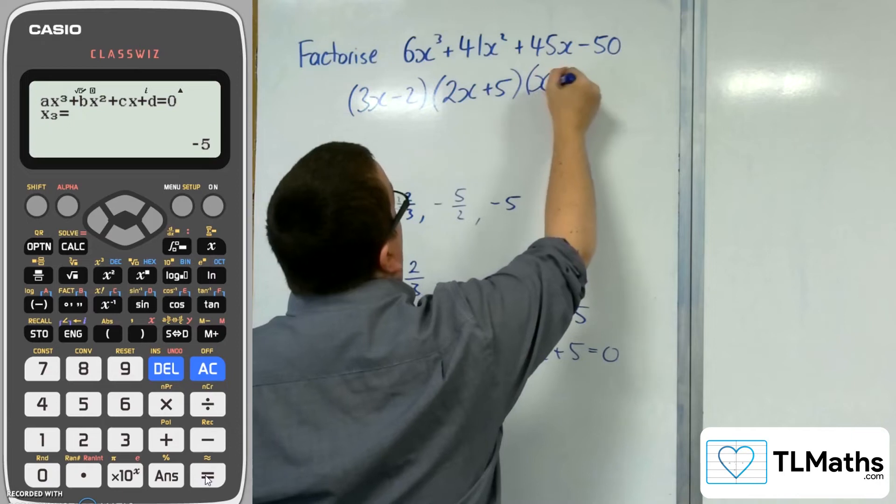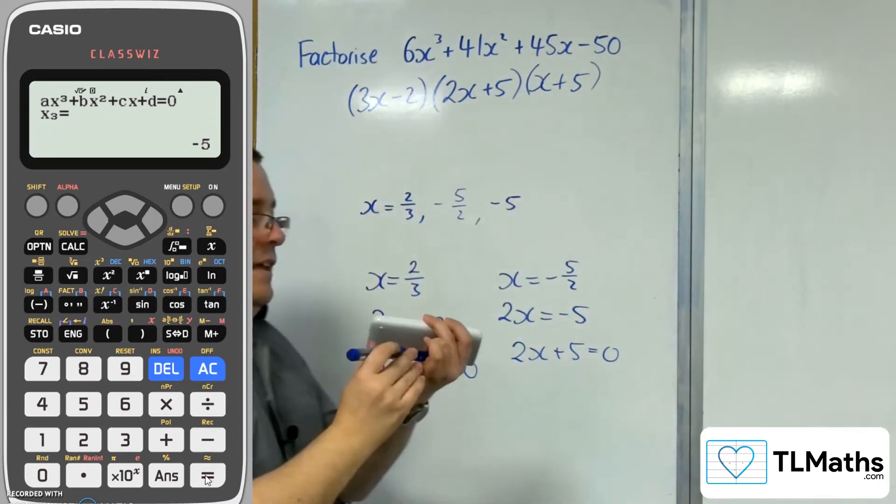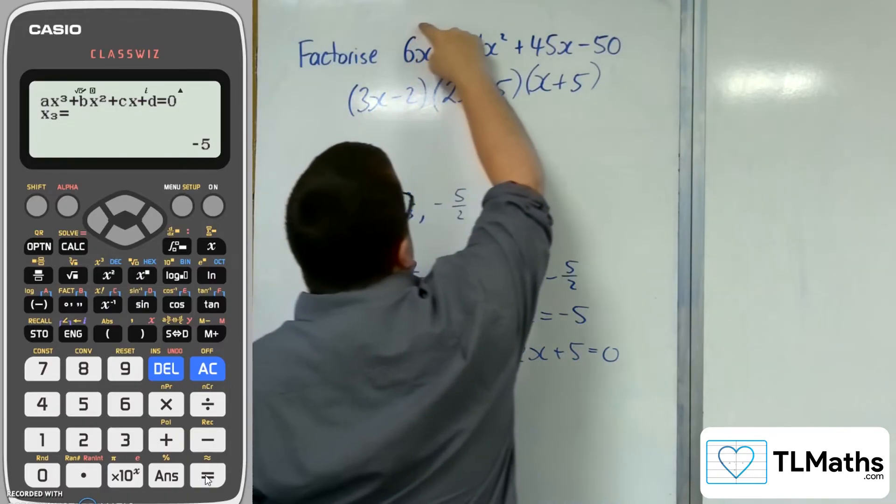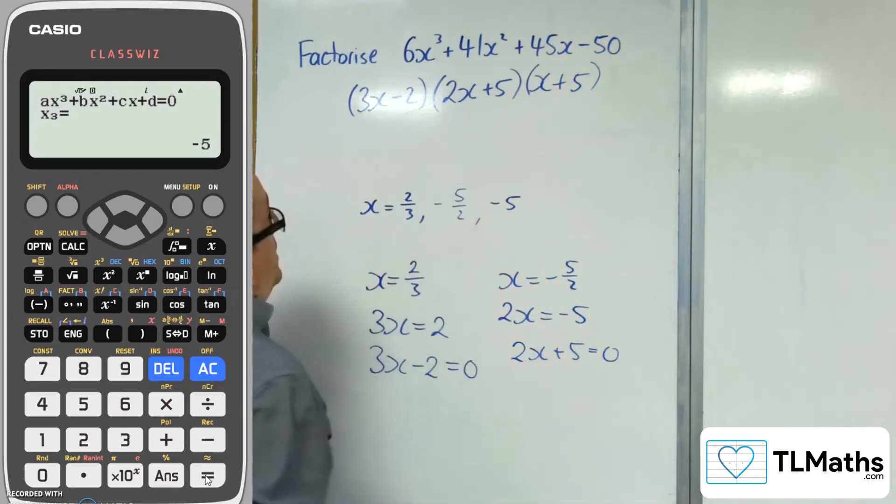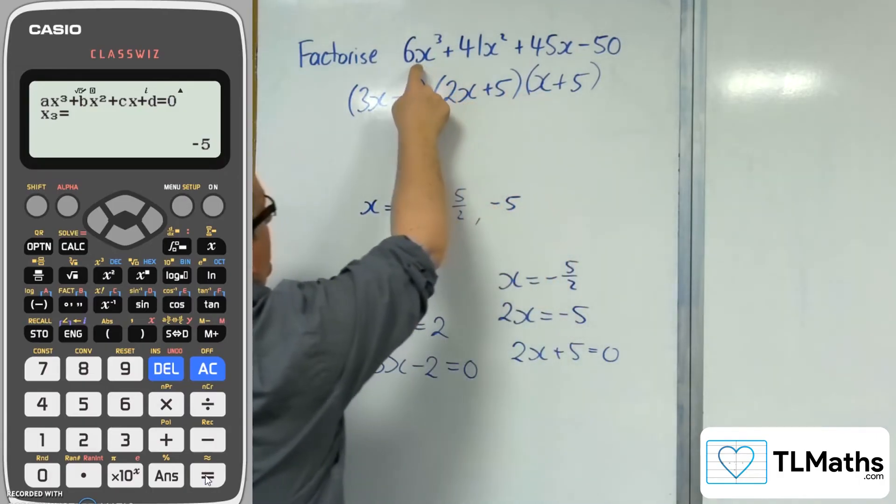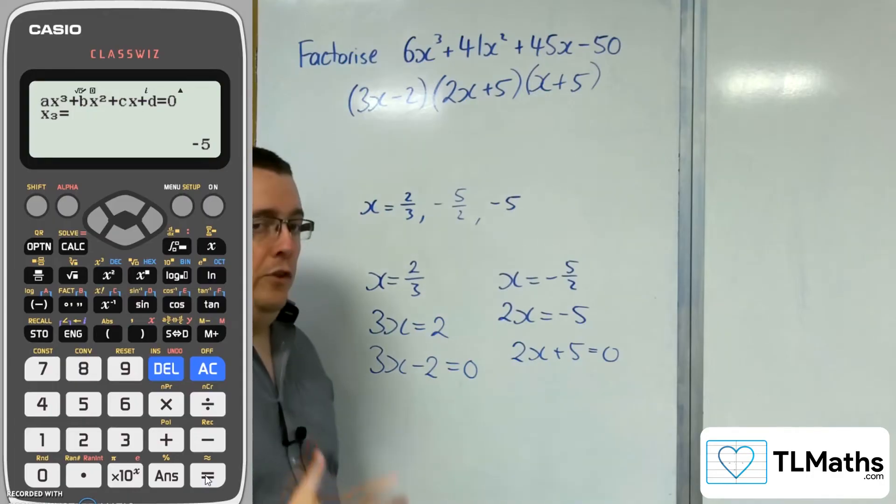The only thing you've got to keep an eye out for is if this had an extra factor that could have been divided through. So you want to check that these 3x times 2x times x multiplies out to make the 6x^3, which it does in this case. So we're all sorted.